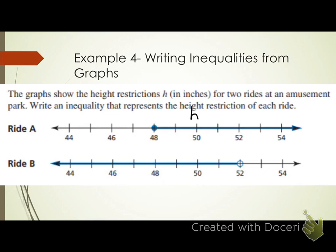For ride A, the circle is on 48 and shading goes to the right, meaning numbers greater than 48. The circle is closed, so it includes 48. The inequality is H ≥ 48 — a person must be at least 48 inches tall to ride.